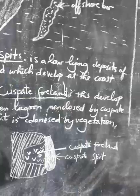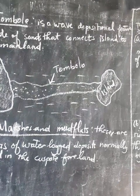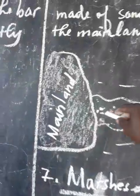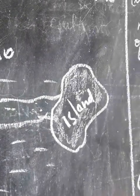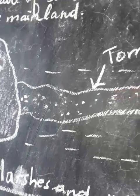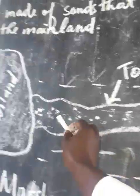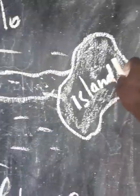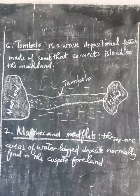Feature number six is a tombolo. A tombolo is a wave depositional feature made of sand that connects an island to the mainland. Waves from different directions bring materials and deposit them between the mainland and the island, forming a depositional feature that connects the two. So a tombolo is a wave depositional feature made of sand that connects an island to the mainland.